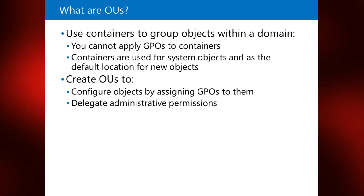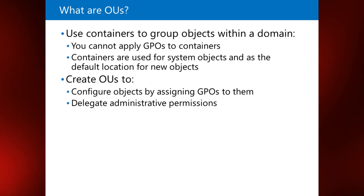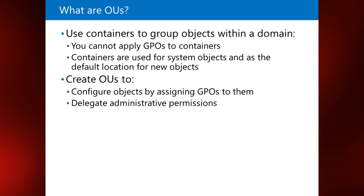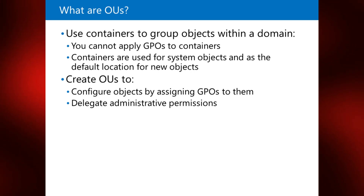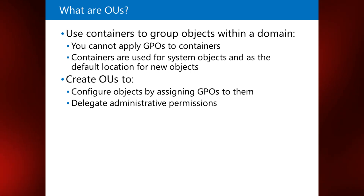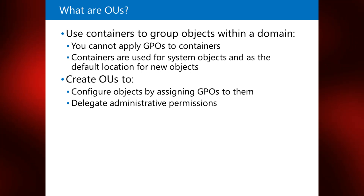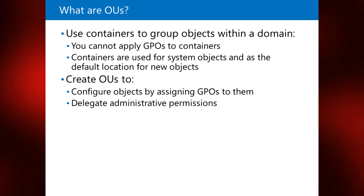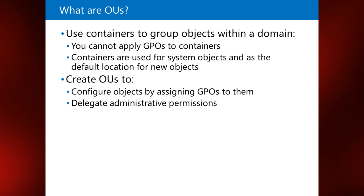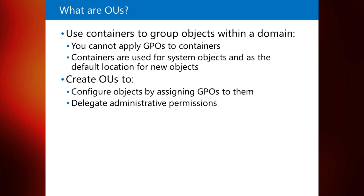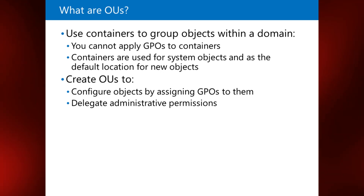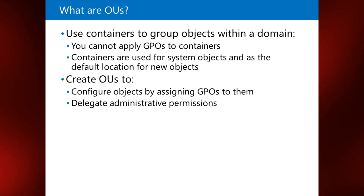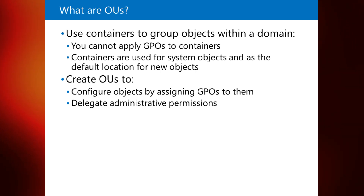For example, if you need to configure all IT administrators' computers in a certain way, you can group all the computers in an OU and then assign a GPO to manage those computers. You can also create OUs within other OUs. For example, your organization might have multiple offices, each with its own IT administrator responsible for managing user and computer accounts. Each office might have different departments with different computer configuration requirements. In this situation, you can create an OU for each office, and then within each of those OUs, create an OU for the IT administrators and an OU for each of the other departments.